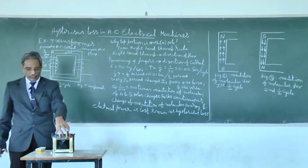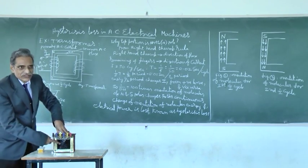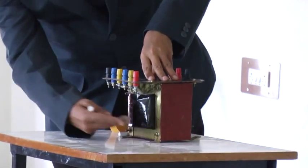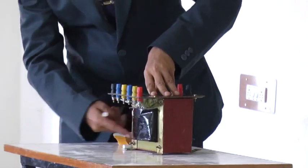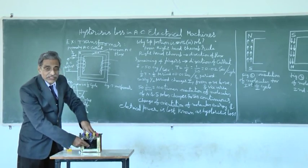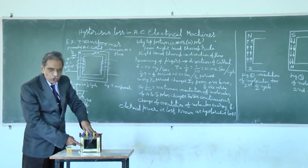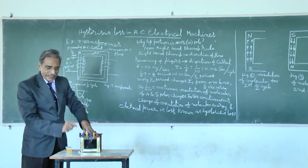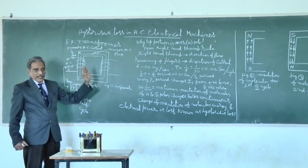For example, you see a transformer. Transformer consists of core and windings. This is of course a three limb transformer. This is known as limb. Center also limb is there. On the limb there is winding. So like that around the core, there will be winding.